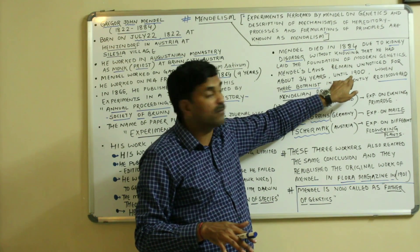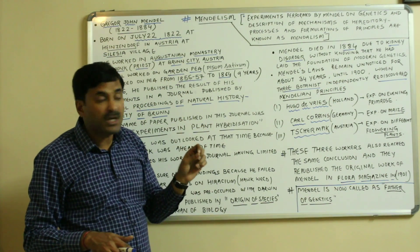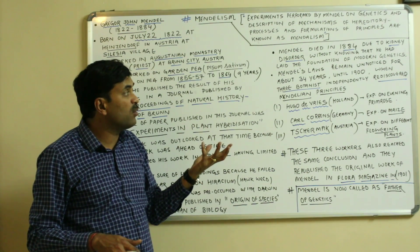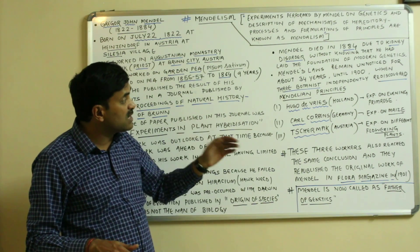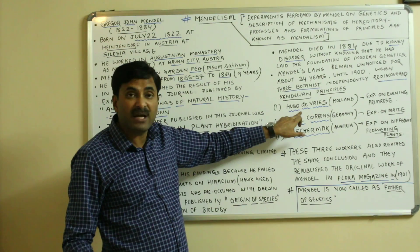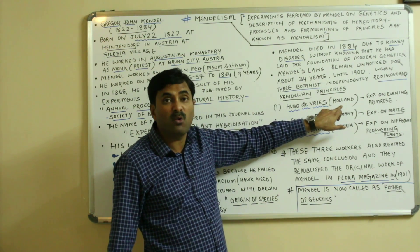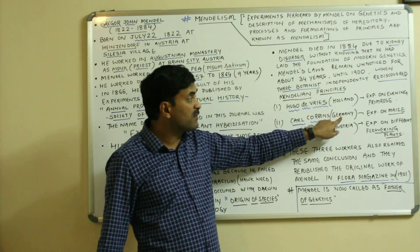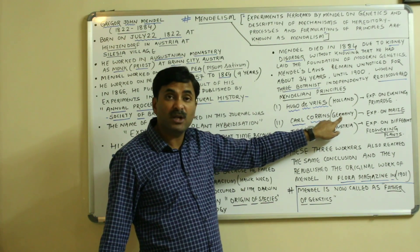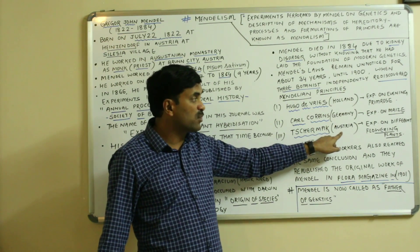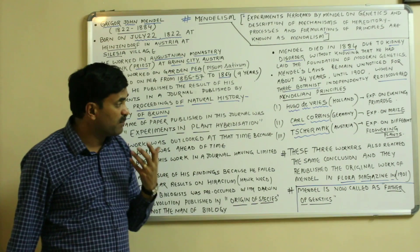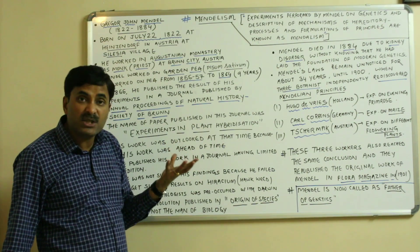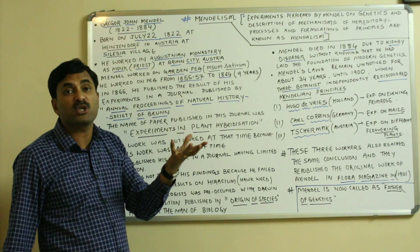When the next century started, in the beginning of the century, three botanists independently rediscovered Mendel's principles. The names of the three scientists were: first one was Hugo de Vries, he was from Holland and he was working on evening primrose, which is also called Oenothera lamarckiana. Carl Correns, who was from Germany, he experimented on maize. And Erich von Tschermak, who was from Austria, he worked on different flowering plants. These three workers independently worked, but these three workers also reached the same conclusion which was actually given by Mendel.